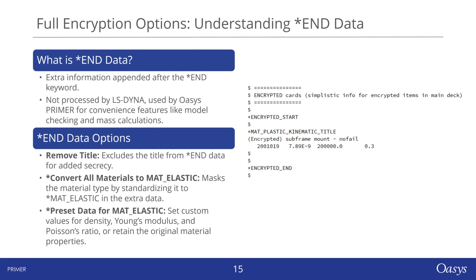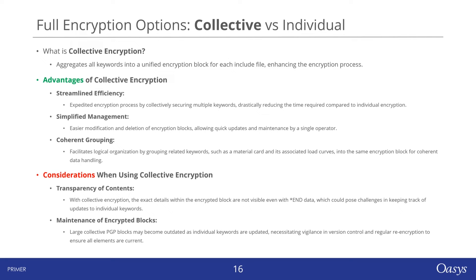With full encryption, we provide two distinct methods: collective encryption and individual encryption. Collective encryption amalgamates all keywords into a single encryption block within each include file. This is quicker than encrypting keywords individually and simplifies management as all encrypted keywords are grouped together. Should you need to remove encrypted data, you can do so by deleting just that block. It also supports coherent grouping, enabling you to encrypt related keywords together — like all material keywords or associated load curves — which helps maintain organized data handling.